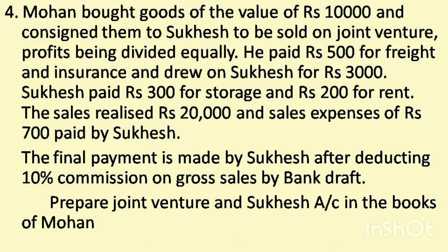Question No. 4: Mohan bought goods of the value of Rs. 10,000 and consigned them to Sukhesh to be sold on joint venture, profits being divided equally. He paid Rs. 500 for freight and insurance and drew on Sukhesh for Rs. 3,000. Sukhesh paid Rs. 300 for storage and Rs. 200 for rent. The sales realized Rs. 20,000 and sales expenses of Rs. 700 were paid by Sukhesh. The final payment is made by Sukhesh after deducting 10% commission on gross sales by bank draft. Prepare joint venture account and Sukhesh account in the books of Mohan.